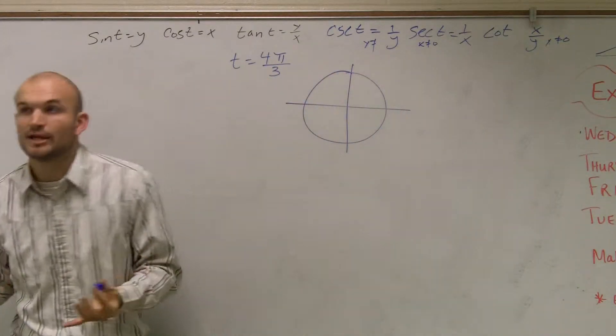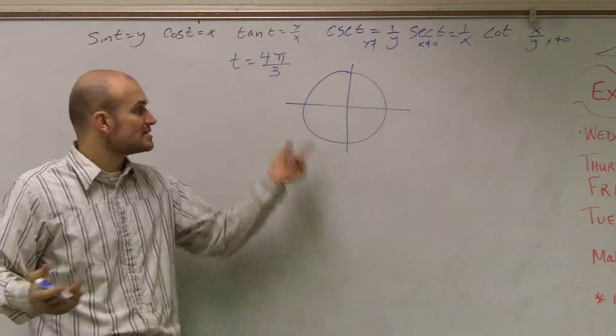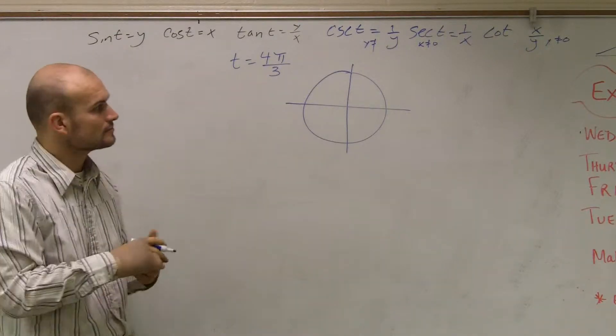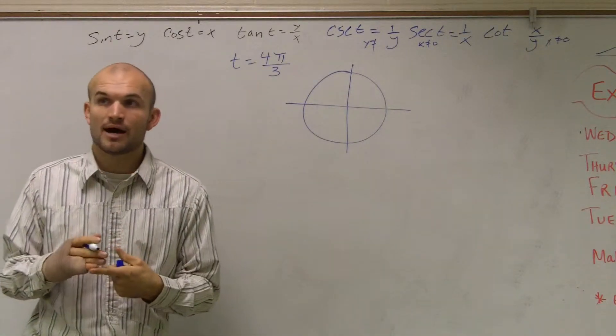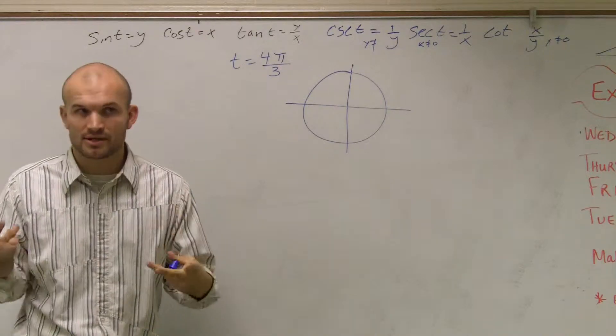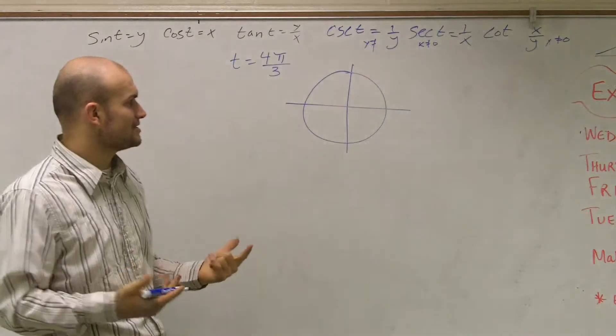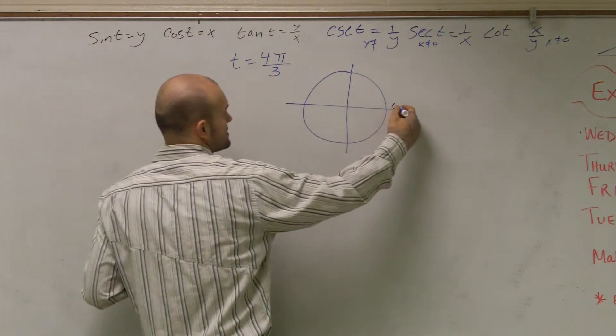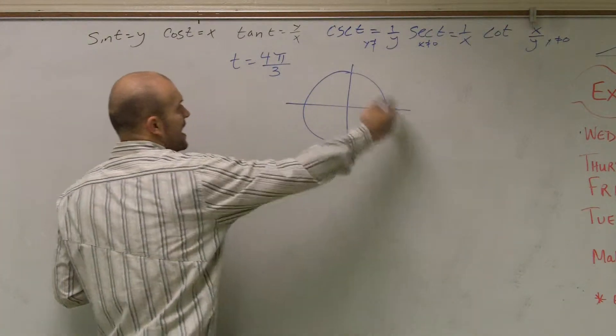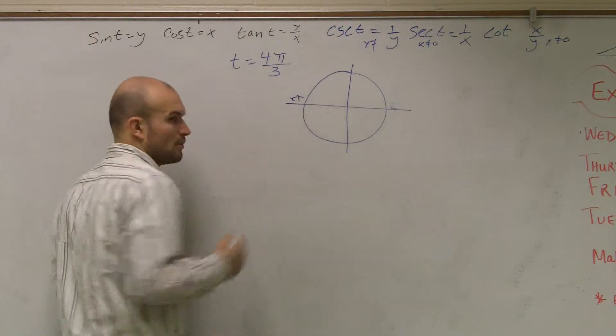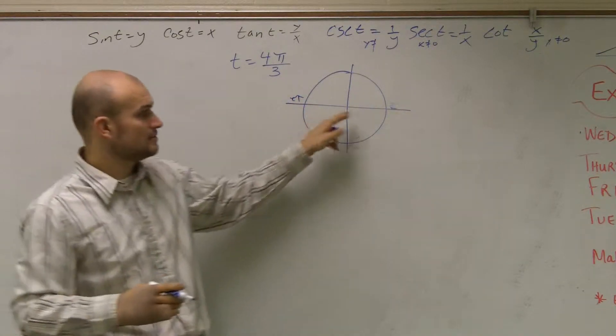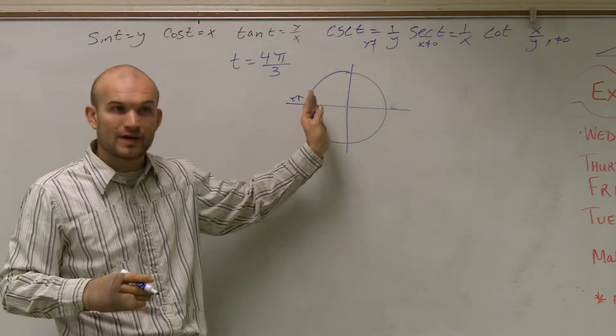Alright, so the next thing we need to do, the first step, is to find where is this point 4π over 3. I told you guys in the last problem, this is the most important part. You have to determine where it is on the graph. And 4π over 3, remember what I like to do is if I know that this is, if here's my starting point, halfway around the circle is what we call π radians, right? It ends up being π radians.